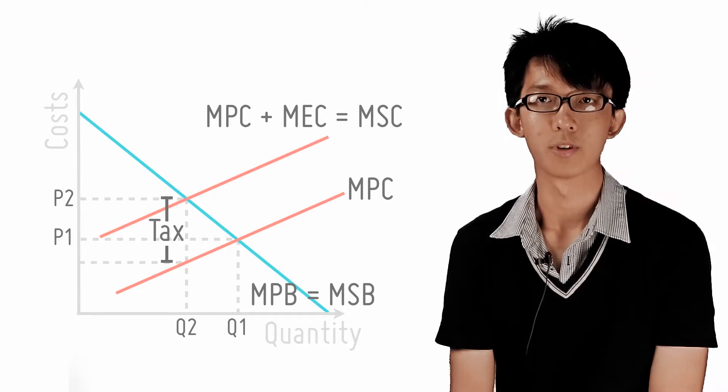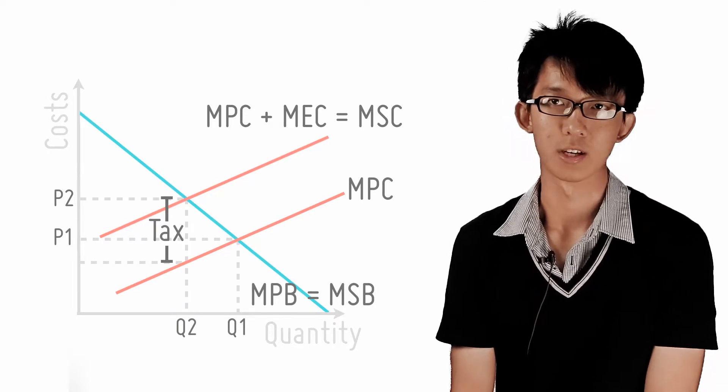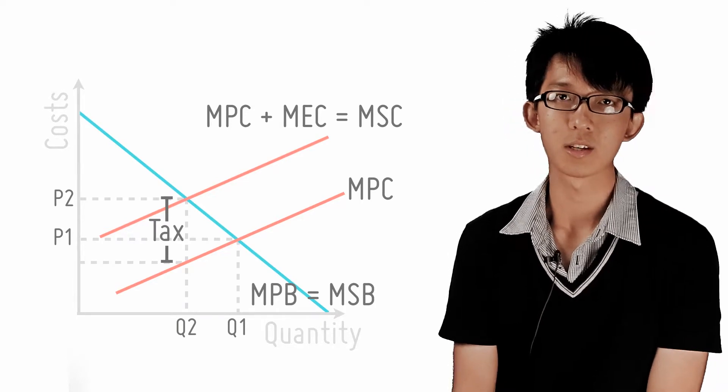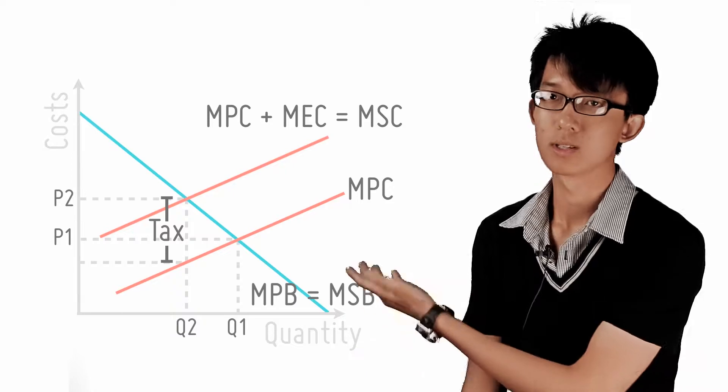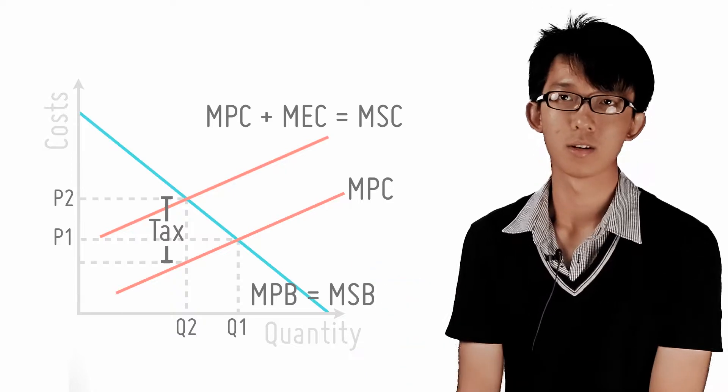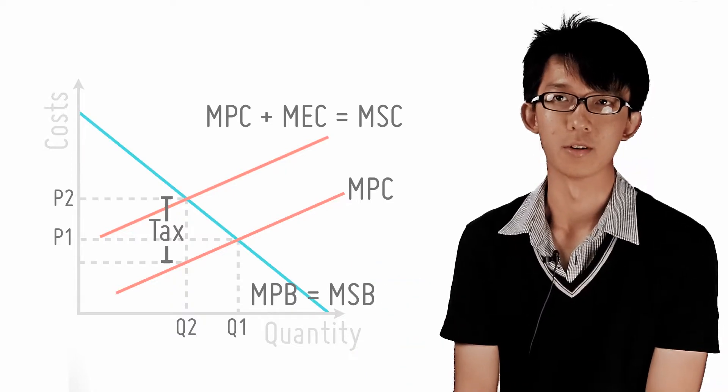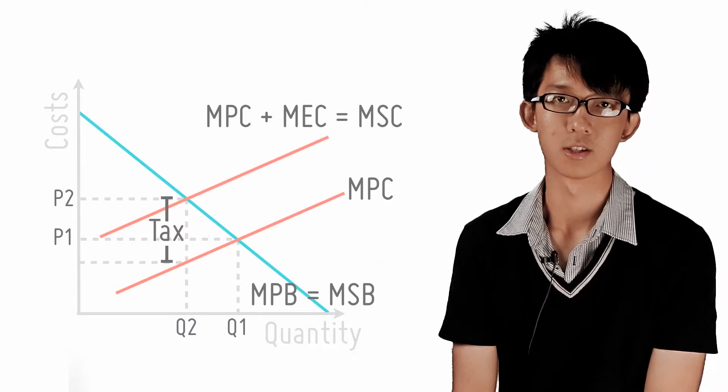However, with the implementation of a tax, the MPC curve will shift upwards and the socially optimal level of production is achieved.